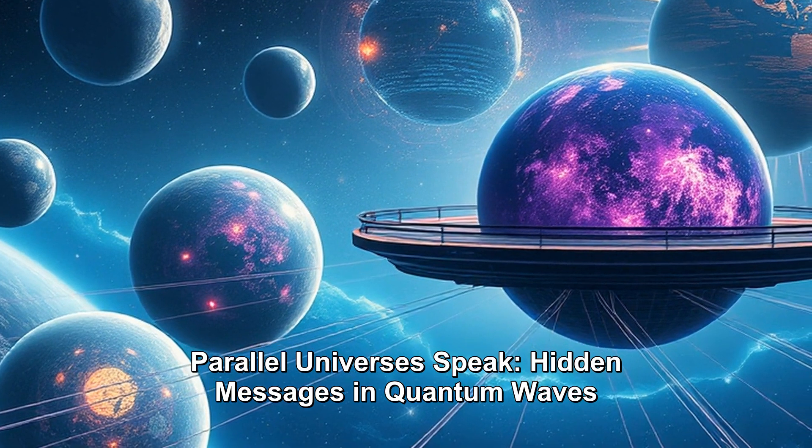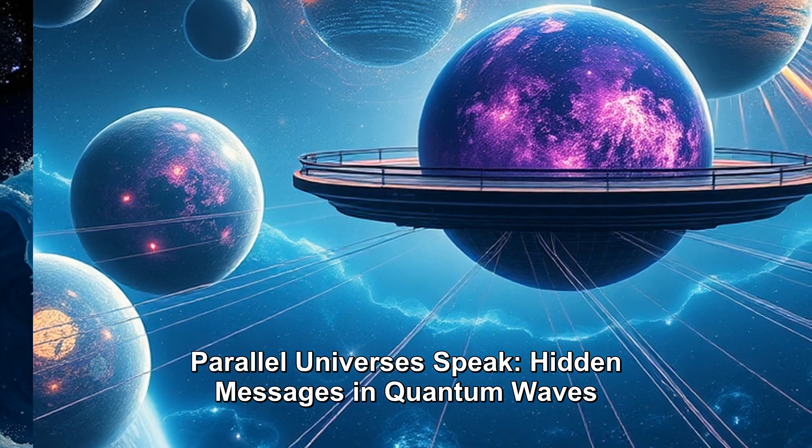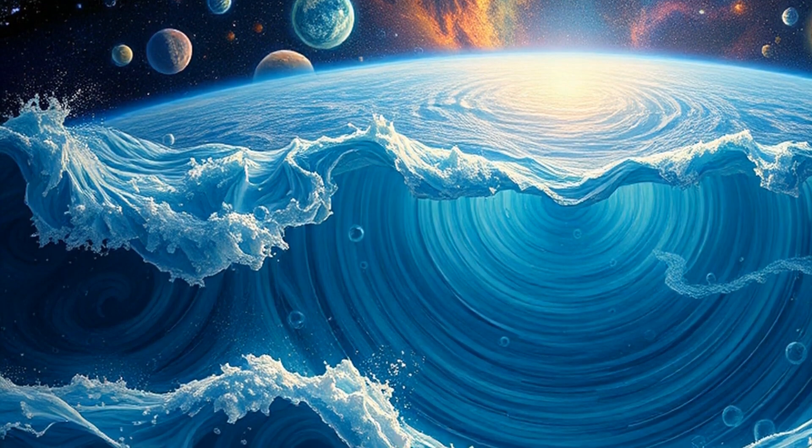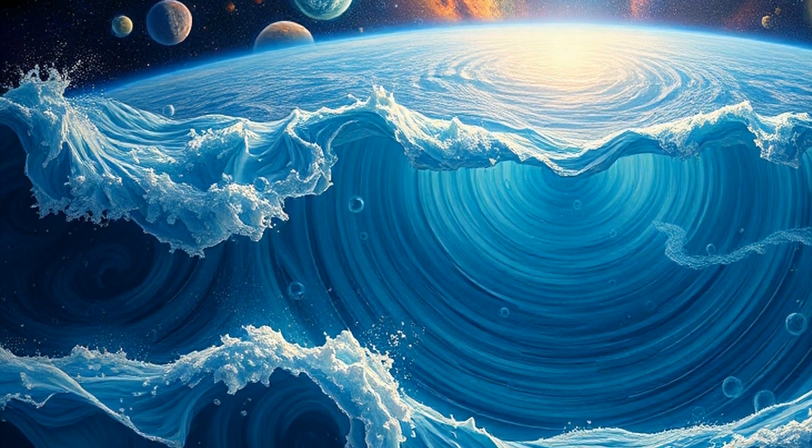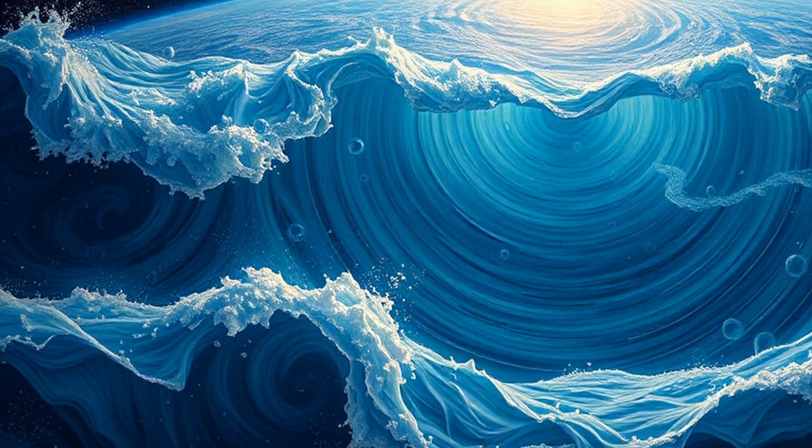Now, let's talk about quantum interference. It might be the strongest clue we have that universes can actually interact. Think of throwing two stones in a pond. The ripples meet and create patterns, right? Quantum interference works similarly, but with waves of probability. When scientists shoot particles through special screens, they don't just go through one slot. They seem to pass through multiple paths at once, creating wave-like patterns.